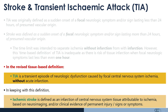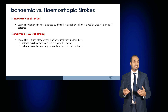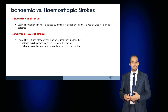Consequently, the definition of a stroke is an infarction of the central nervous system tissue attributable to ischemia, based on neuroimaging and/or clinical evidence of permanent injury, signs or symptoms. A stroke can be ischemic or hemorrhagic.